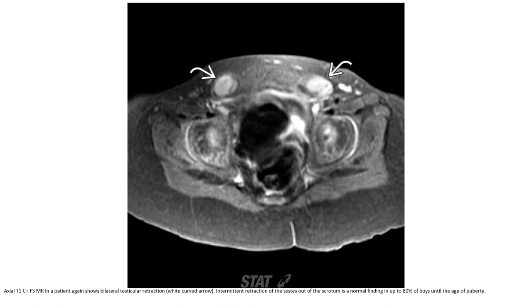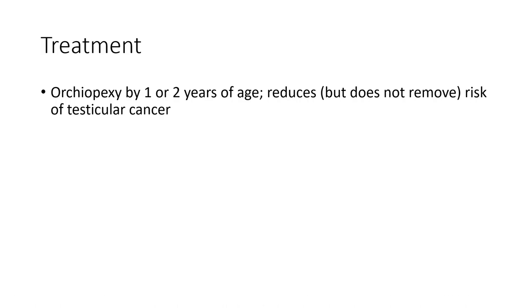T1 with fat suppression MRI in the same patient shows bilateral testicle retraction. Intermittent retraction of the testis out of the scrotum is a normal finding in up to eighty percent of boys until the age of puberty. Treatment — orchiopexy by one or two years of age — reduces the risk of testicular cancer.